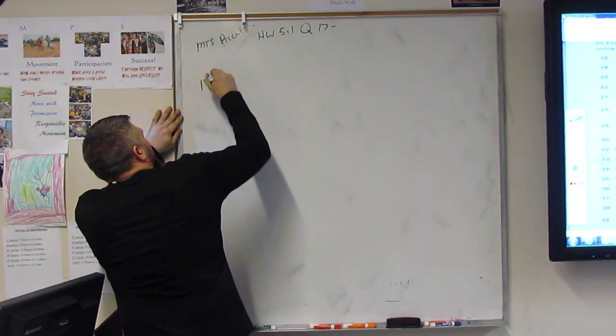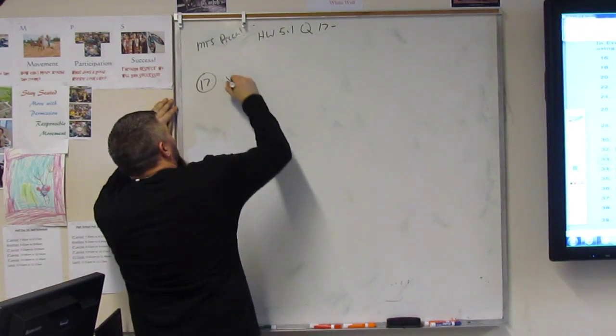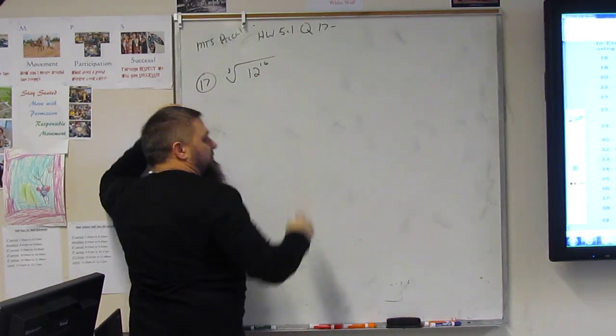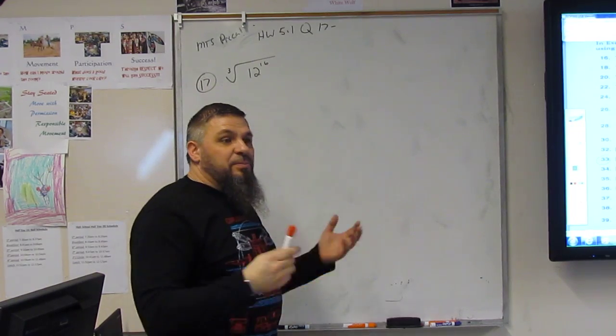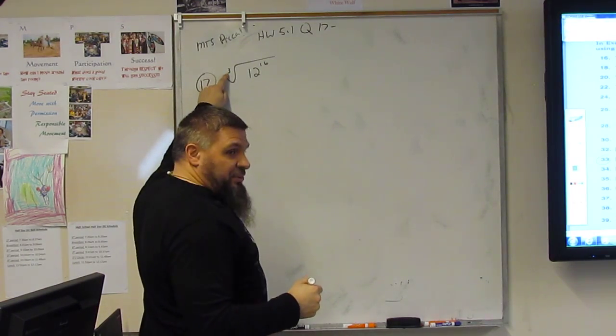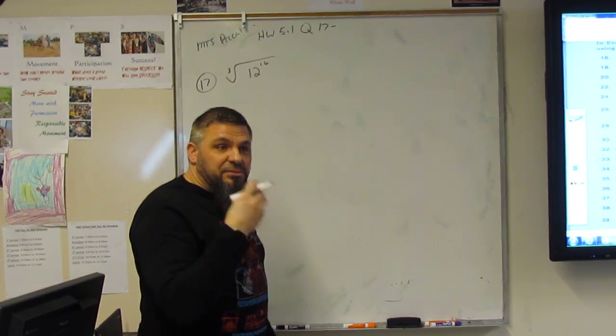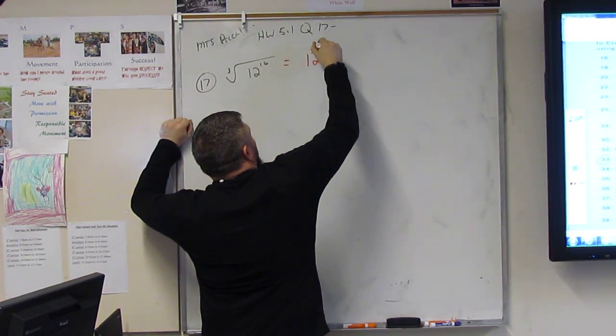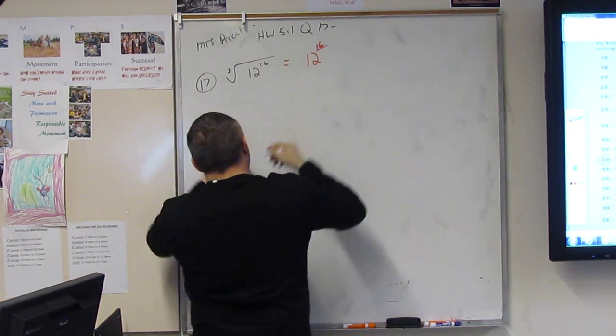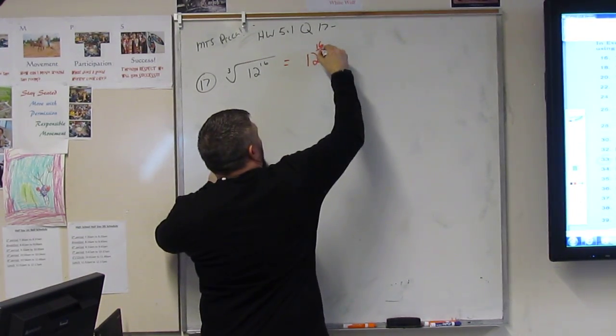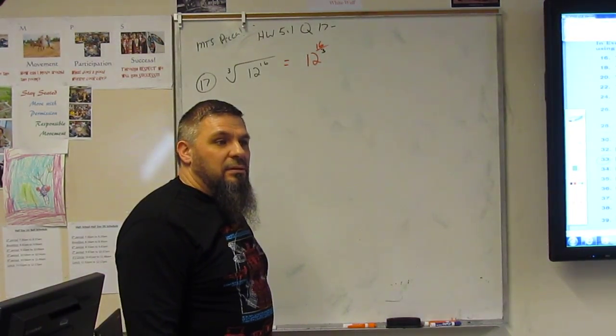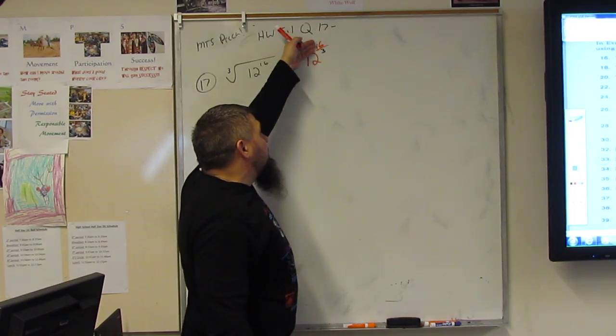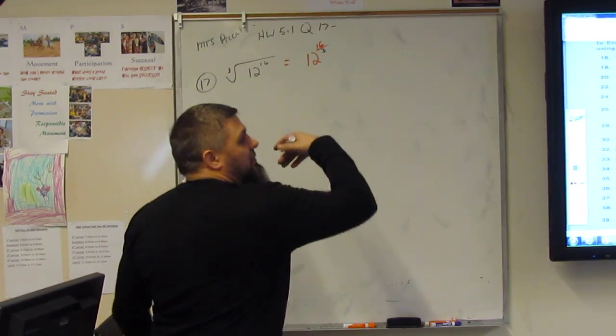So 17 is the cube root of 12 to the 16th. At this point in the game, you should realize that this root is the root of the power, the root of the exponent. When we look at the power, we've got 12 to the 16th and the root is 3. Just like a root of a plant is in the bottom, the flower is up top, the power is up top, and the root is underneath.